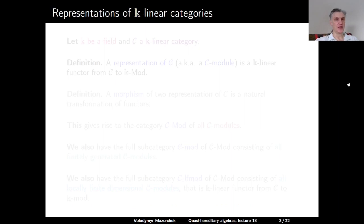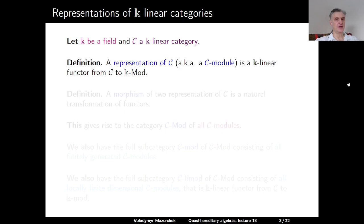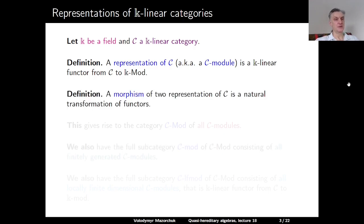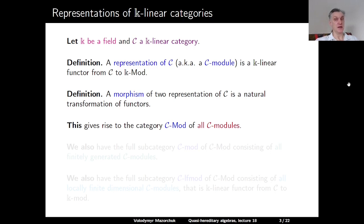Now let us talk about representations of k-linear categories. Let k be a field and C a k-linear category. A representation of C, also known as a C-module, is a k-linear functor from C to the category of all k-vector spaces. A morphism of two representations of C is a natural transformation of functors. In this way, we define the category of all C-modules as the category of all functors from C to k-Mod, where objects are k-linear functors and morphisms are natural transformations.